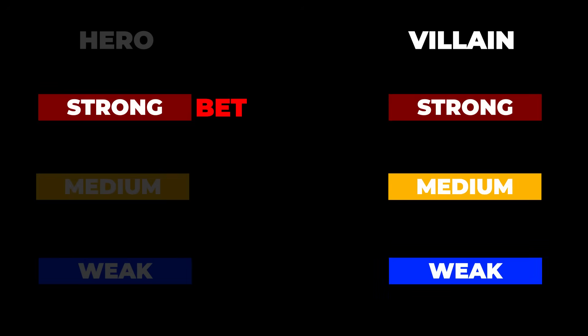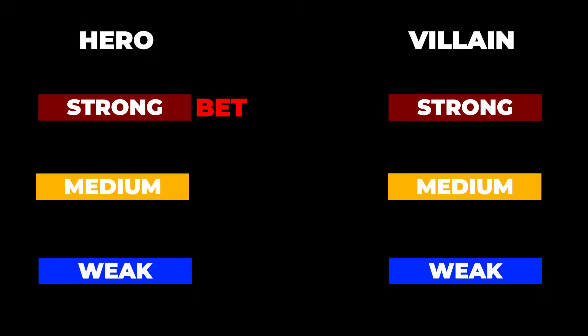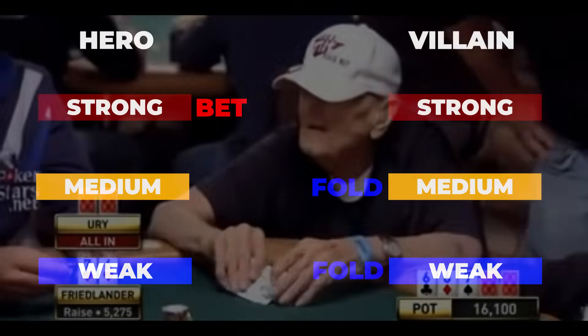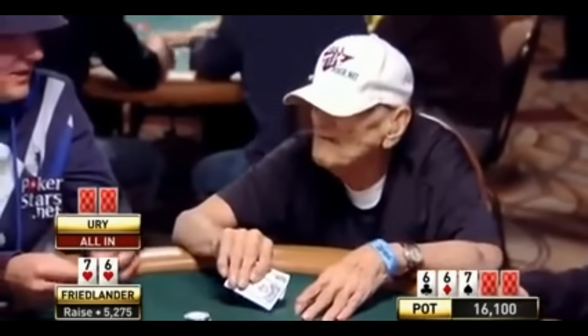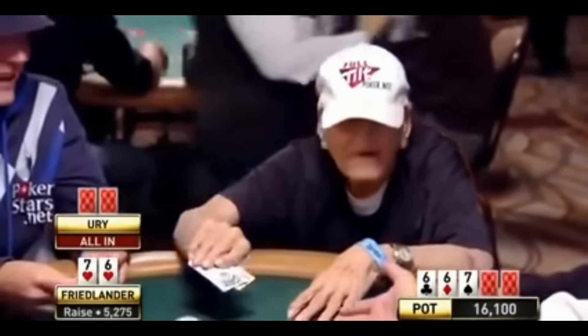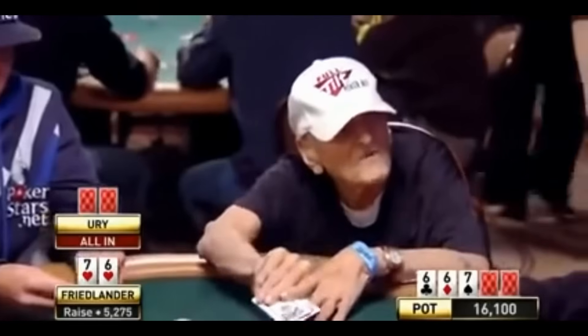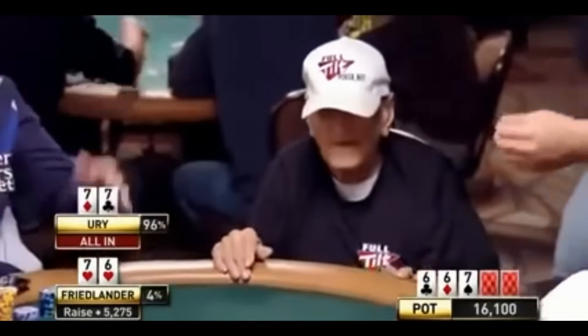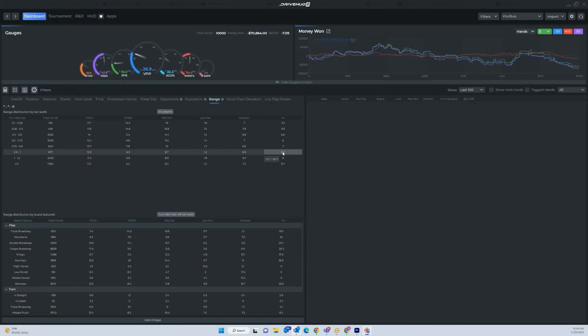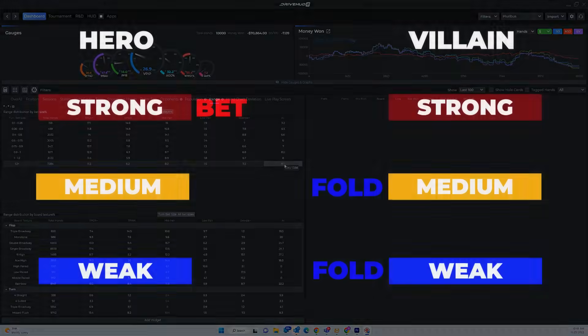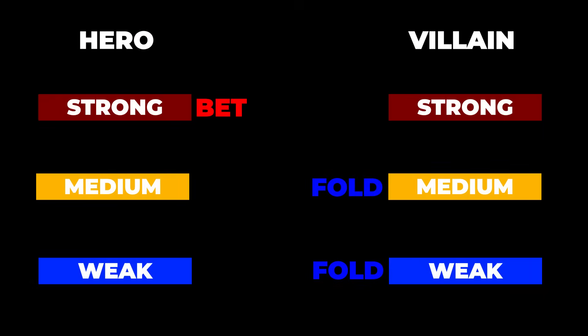However, if we only bet and raise our strong hands, at some point discerning opponents will stop calling us with worse. In a live environment, we've all played against "old man coffee" who has a 5% VPIP and only shows down with aces, kings, queens, and ace-king — and we quickly learn to avoid him once he starts betting big. Online, figuring out if opponents are only betting strong hands is even easier through heads-up displays. So in order to induce opponents to call when we're holding a strong hand, we need to also sometimes bet with our weak hands, also known as bluffing, which also has the potential benefit of getting our opponent to fold a better hand.